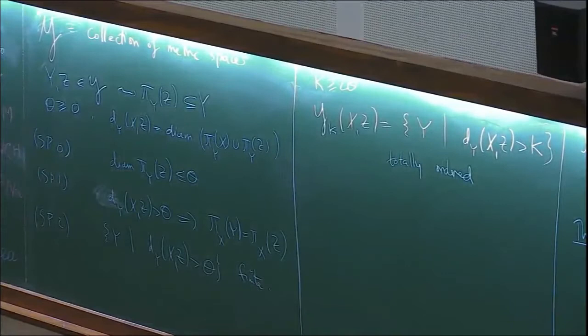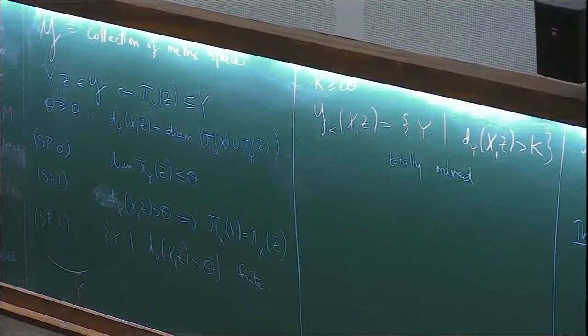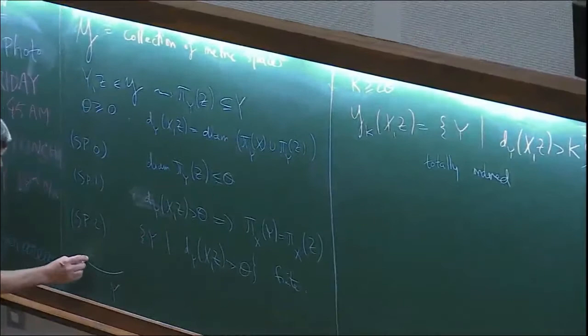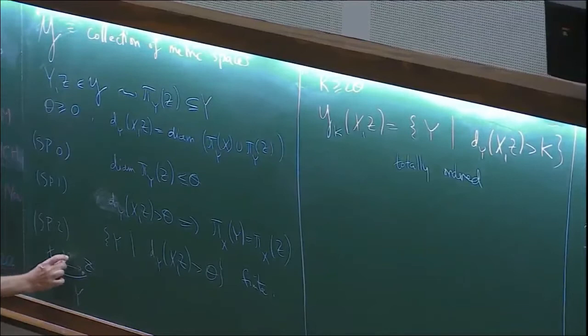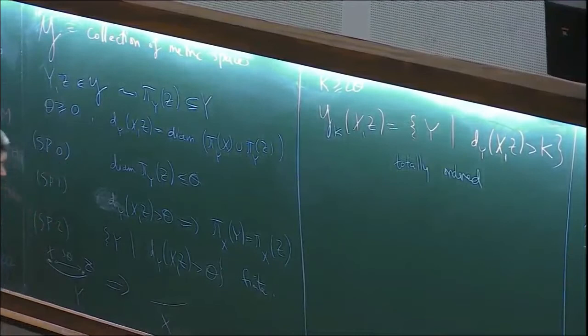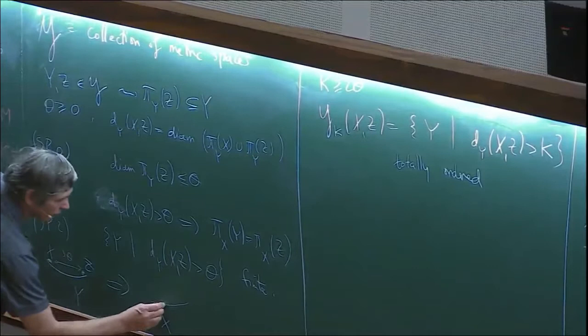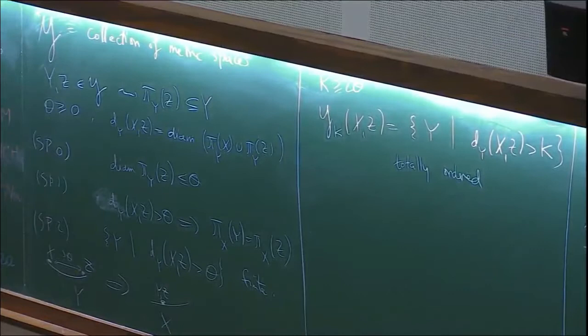The picture for SP1 is: draw Y as a little line, and if X and Z project to dots on Y, their distance is large — more than theta. That implies that if you shift to X, then X thinks that Y and Z are exactly the same. There's kind of one dot where both Y and Z live, and that's what that axiom says.